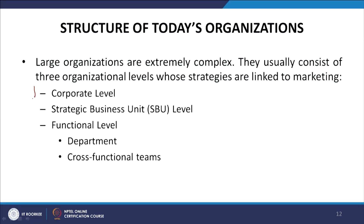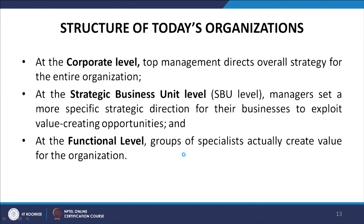Large organizations are extremely complex. They usually consist of three organizational levels whose strategies are linked to marketing. The first level is the corporate level. The second is the strategic business unit or SBU level. The third is the functional level, which can include departments or cross-functional teams. At the corporate level, top managers direct the overall strategy for the entire organization.